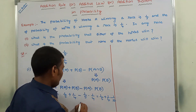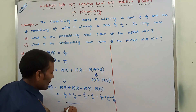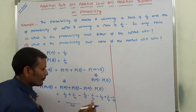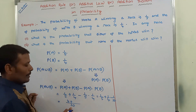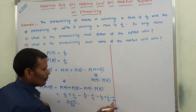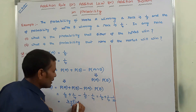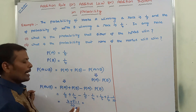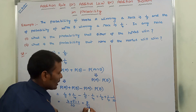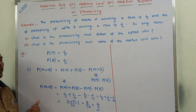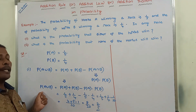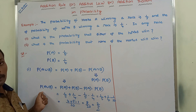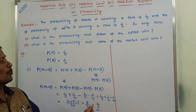That gives us 1/5 + 1/4 − 1/20. The LCM is 20. So: 5 goes 4 times giving 4, 4 goes 5 times giving 5, and 20 goes 1 time giving 1. So we get (4 + 5 − 1)/20 = 8/20 = 2/5. Therefore, P(A ∪ B) = 2/5. The probability that either horse A or horse B wins the race is 2/5.